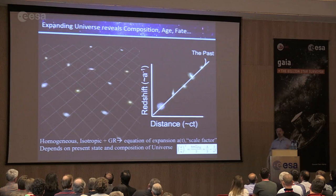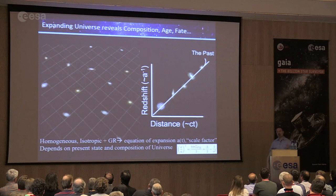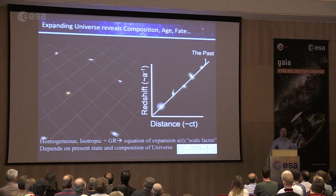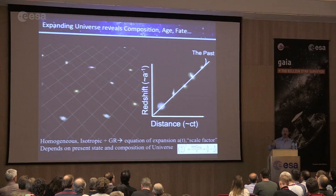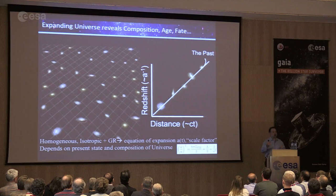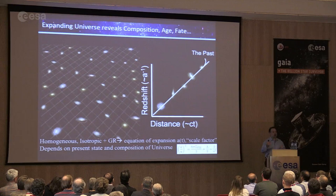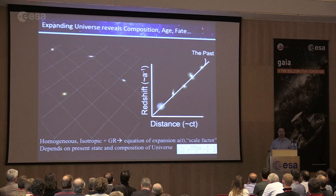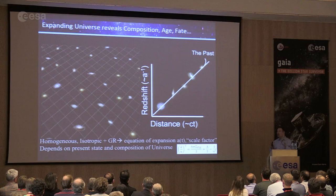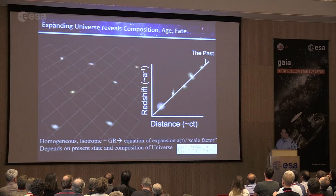We cannot directly measure 'a' or 't', so we measure two closely related quantities. The inverse of 'a' is really the redshift — the effect that stretches wavelengths of light, easy to measure in distant galaxies. More tricky is measuring 't'. We can't find reliable clocks in the universe, but we can measure distance, which relates to time via the speed of light. By measuring lots of distances and redshifts, we measure the expansion rate both today and in the past.